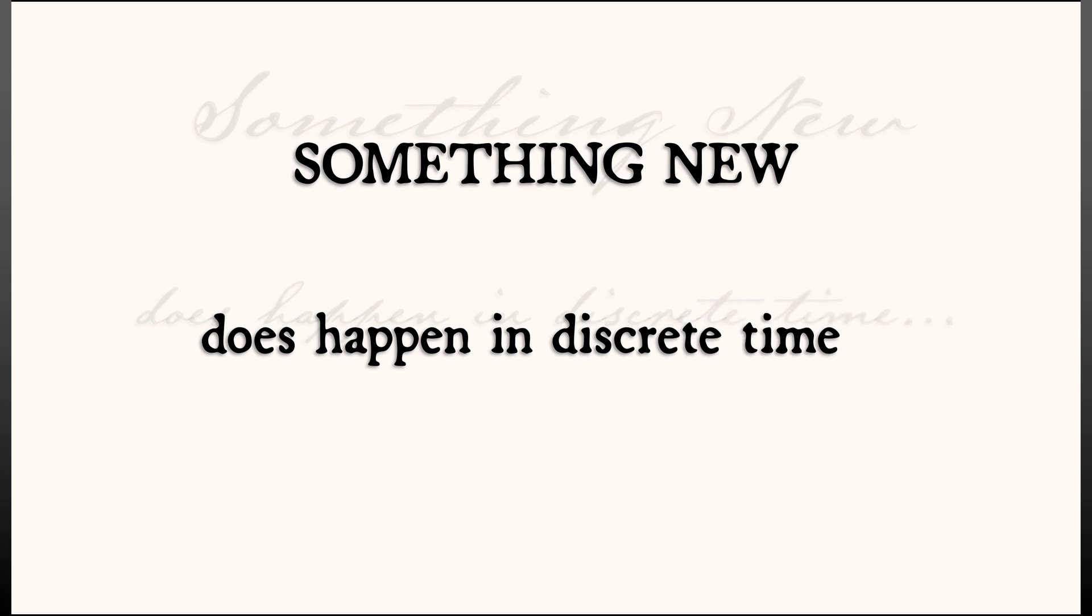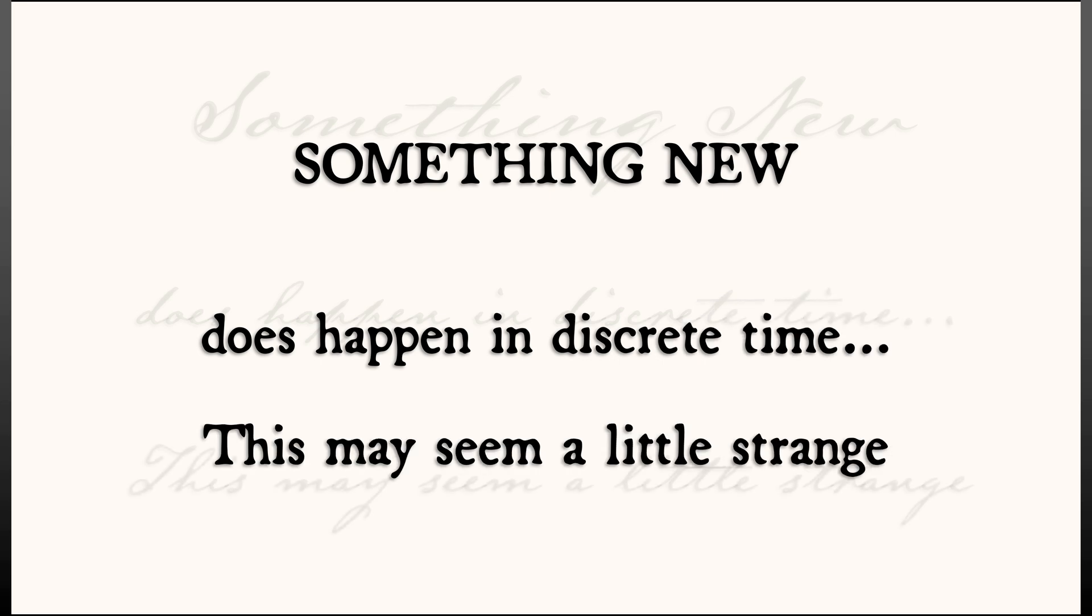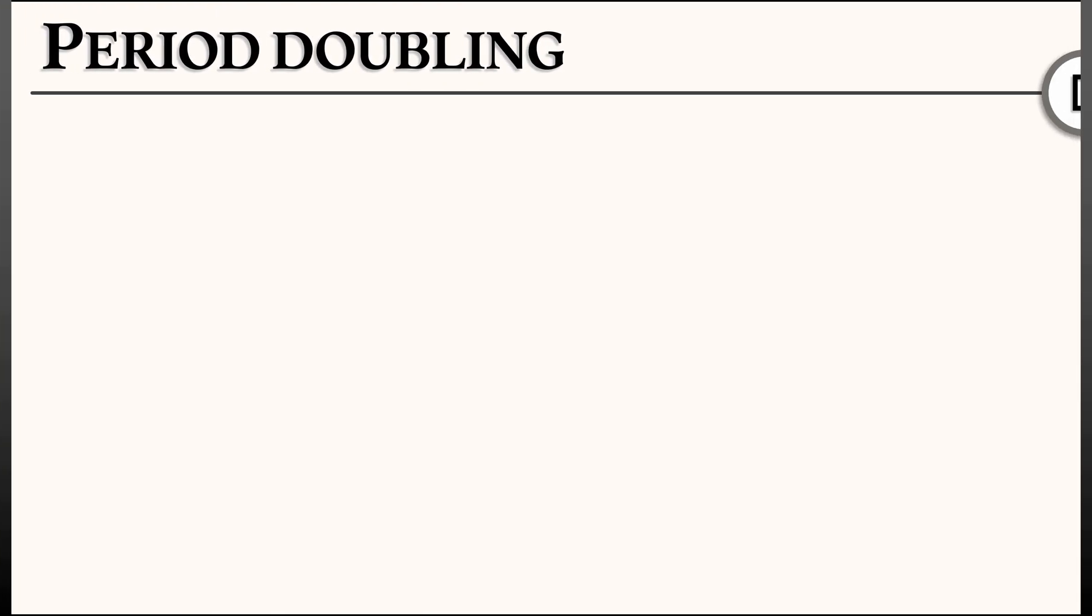There is something genuinely new that happens in discrete time systems. This bifurcation is a little bit different than anything that we've seen. This is called the period doubling bifurcation.